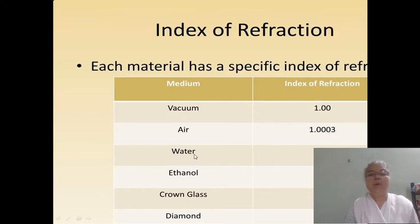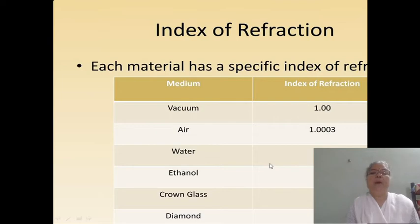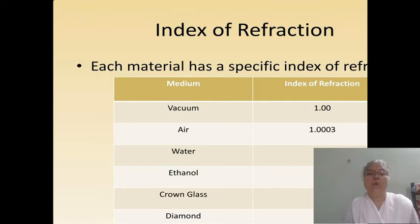Here are refractive indices of different media: vacuum = 1.00, air = 1.0003, water = 1.333, ethanol = 1.36, crown glass = 1.52, and diamond = 2.42. If we have a mixture of two colorless liquids such as benzene and ethyl alcohol, we can still see a difference between the layers.